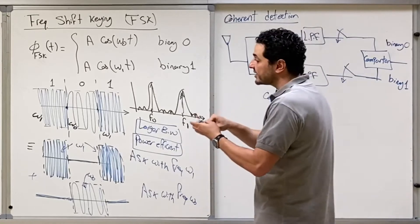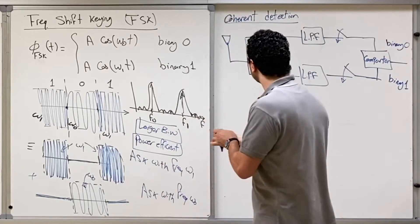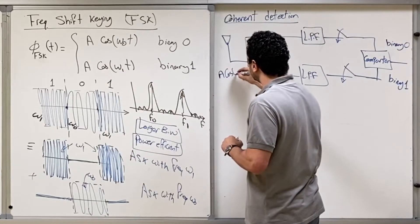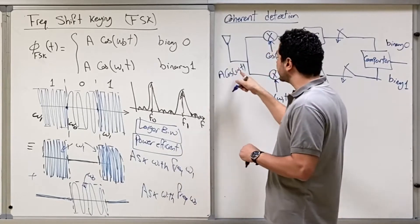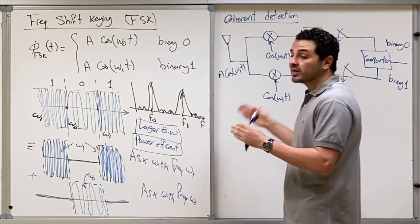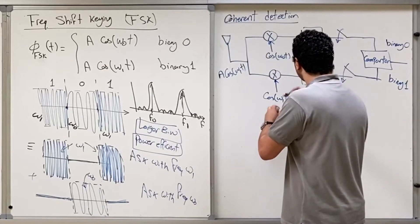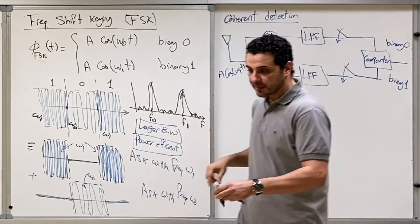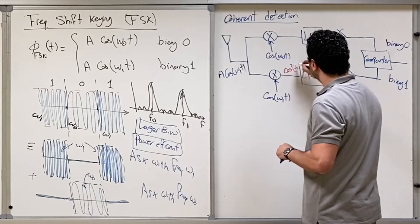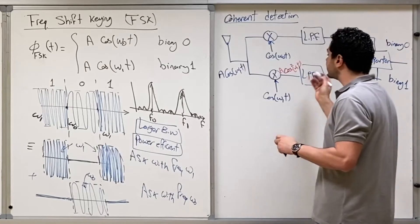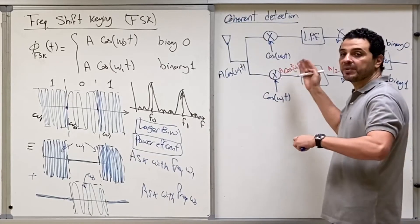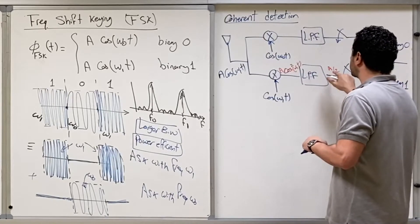Let's do one example. If the received signal is binary one, that means cosine omega-one t. When you multiply cosine omega-one t by cosine omega-one t in the lower branch, you get cosine squared omega-one t. When you pass this through the low-pass filter, you get a/2, because cosine squared equals half times (1 + cosine 2*omega-one*t). So you get a constant a/2 at the output.